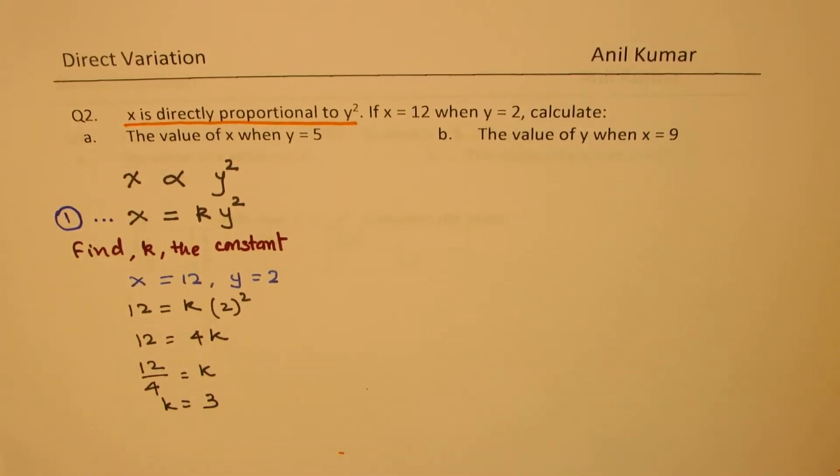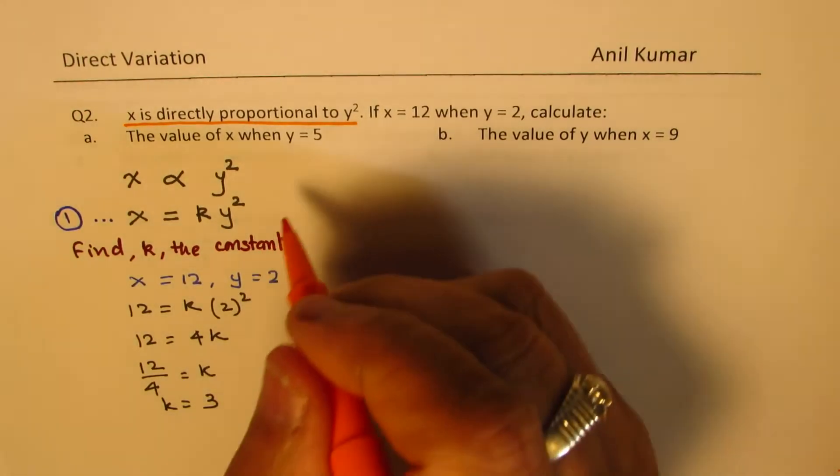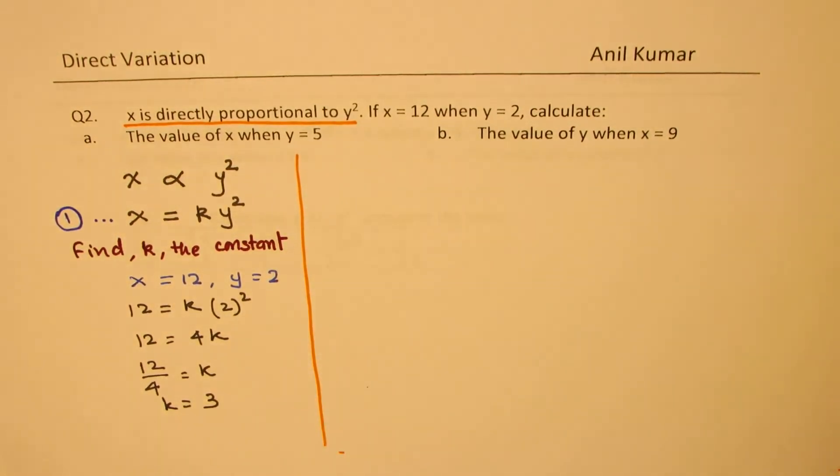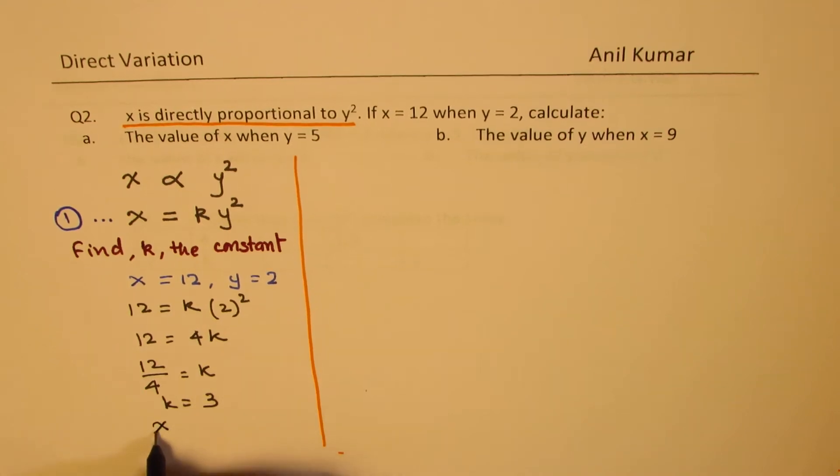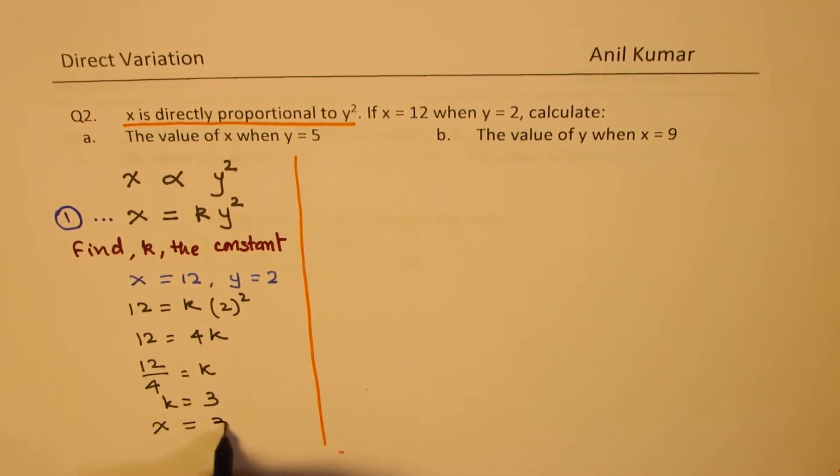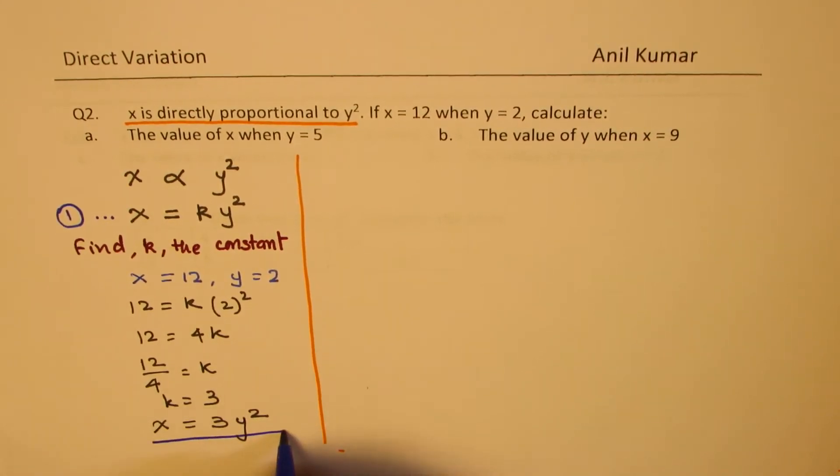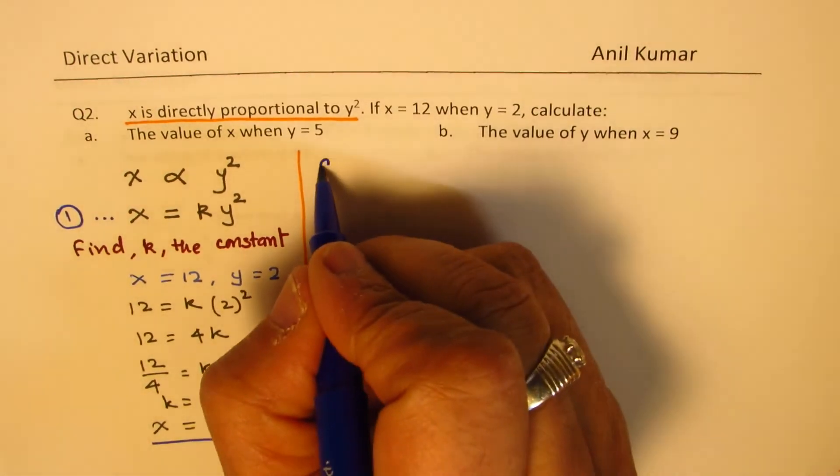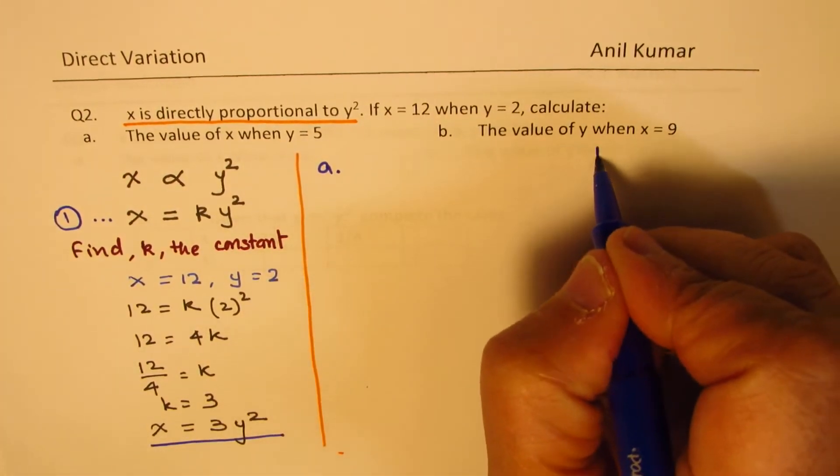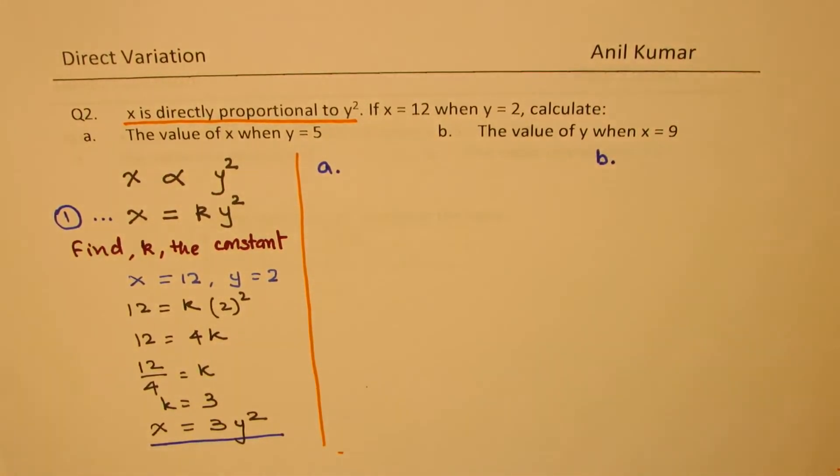So that gives you the equation of the given example. So we can write down now that x is equal to 3 times y square. So this is the equation with which we'll work and find the solution to part a and part b. Is that clear to you?